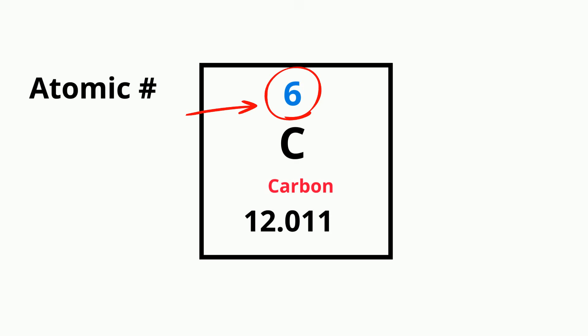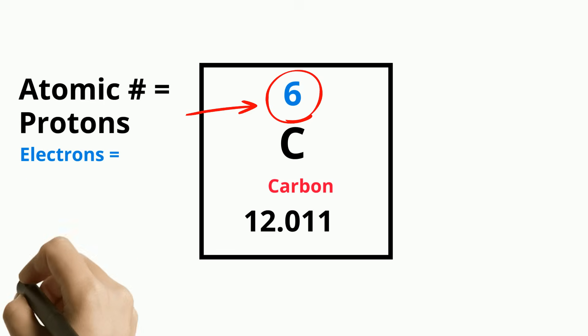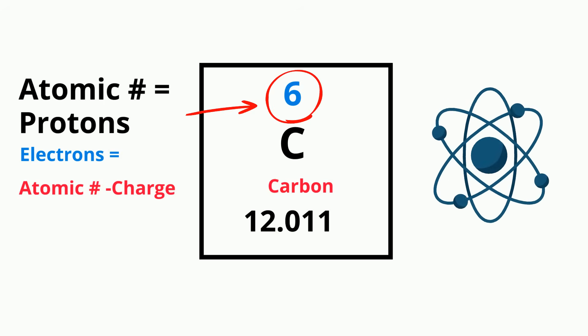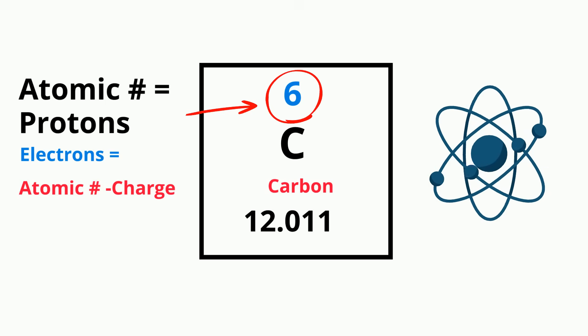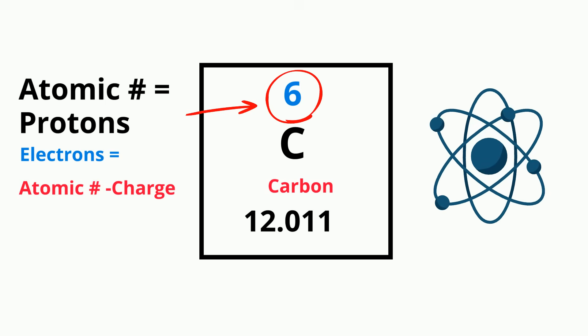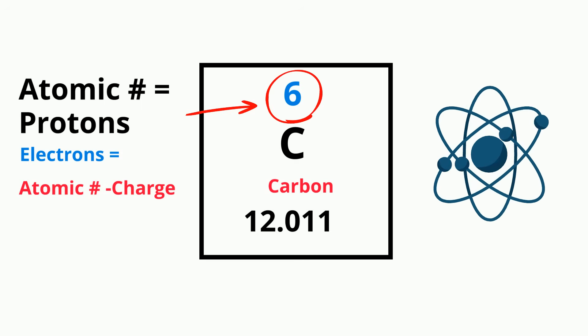This equals the number of protons in the nucleus as well as the number of electrons. To find the electrons, take the atomic number and subtract the charge. An atom can gain or lose electrons and become what is known as an ion, which is nothing more than a charged atom. Adding or removing electrons from an atom does not change which element it is.